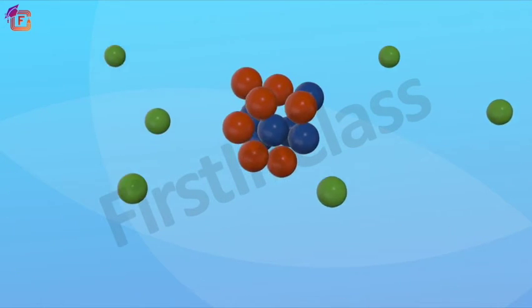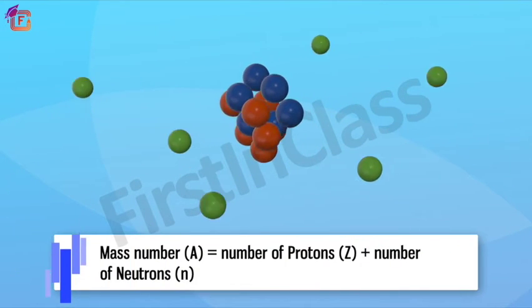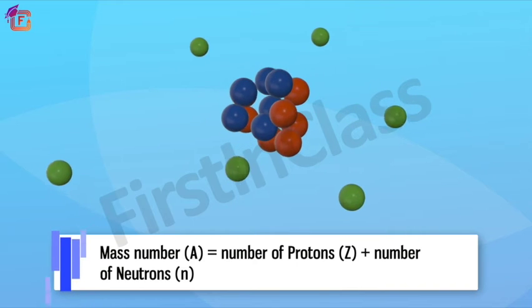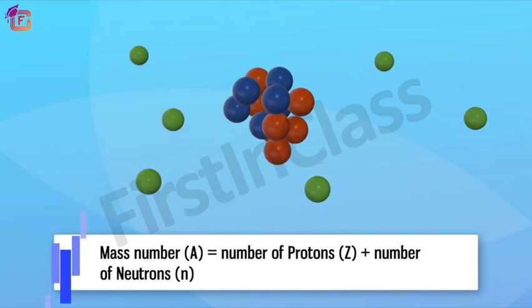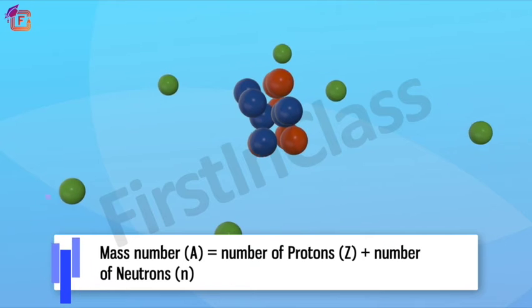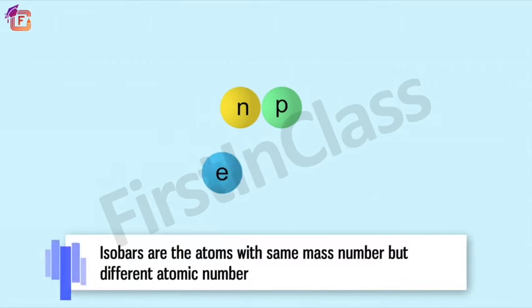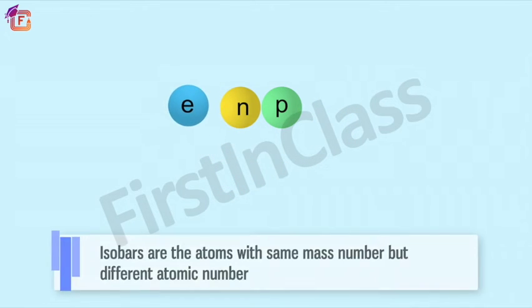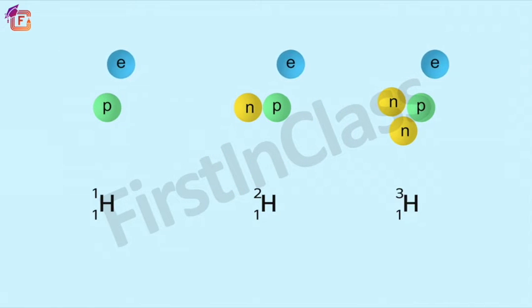The total number of nucleons is termed as mass number of the atom. Mass number of an atom equals the number of protons Z plus the number of neutrons. Isobars are the atoms with same mass number but different atomic number.